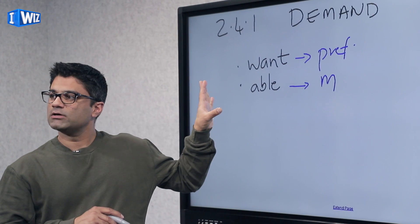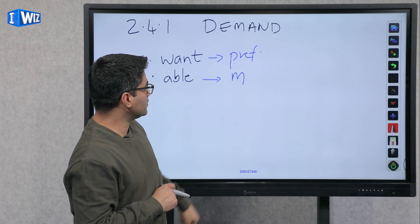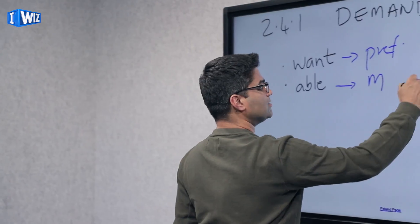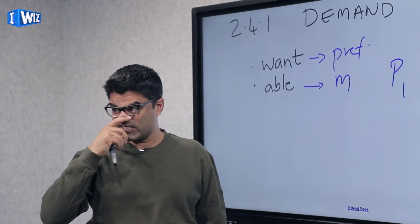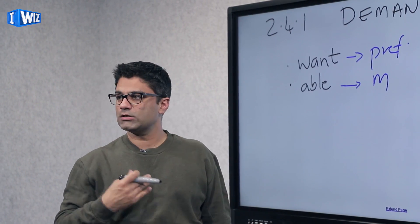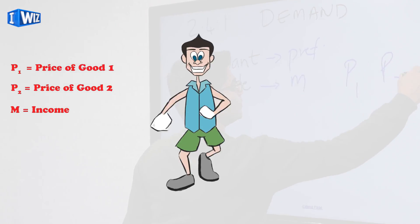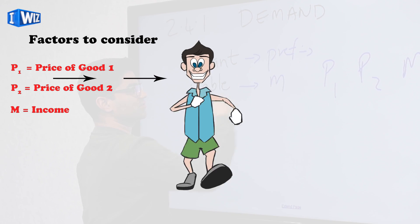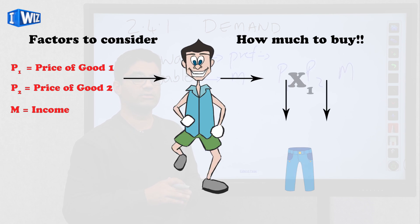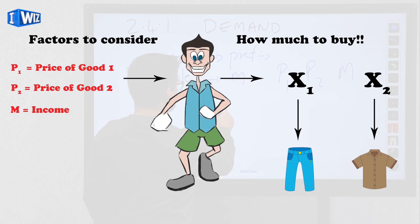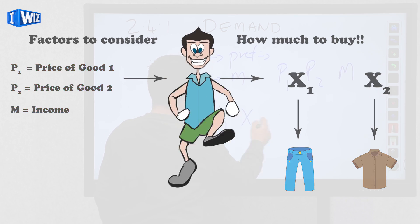So the parameters that we based our decision on how much to buy were the price of goods. We have two goods in all the examples we've done so far, X1 and X2. We've got two prices, price of good one and price of good two. We've had income and then your tastes and preferences as well. So those are all the parameters that help us decide how much of X1 and or X2 to buy.